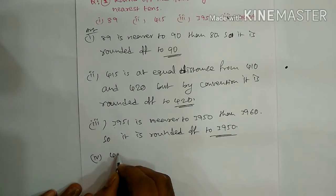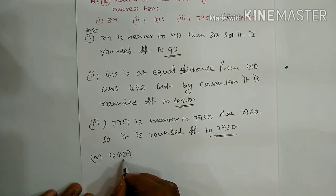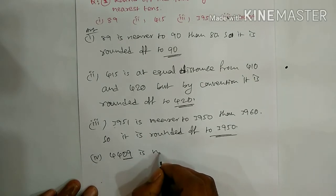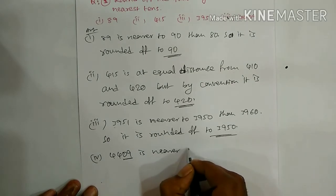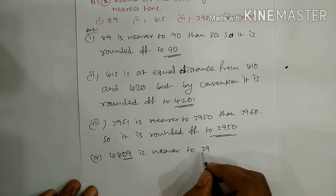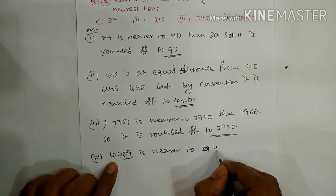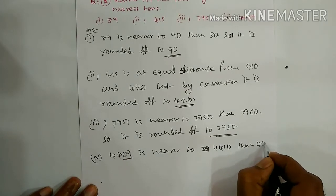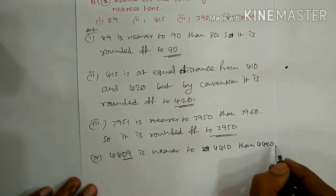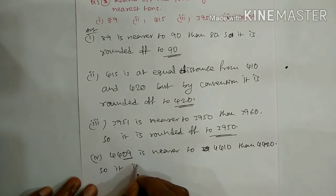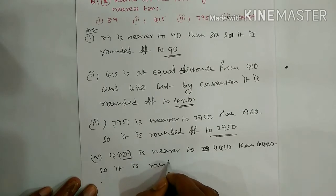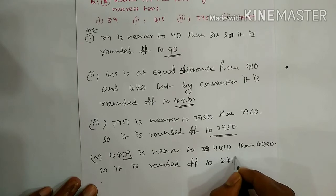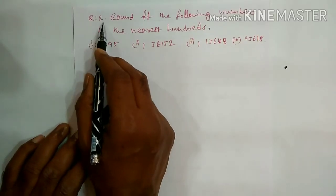Fourth: 4409. Here the units digit is 9, and 9 is nearer to 10. So 4409 is nearer to 4410 than 4400, and it is rounded off to 4410.